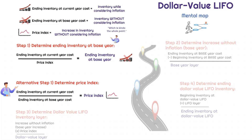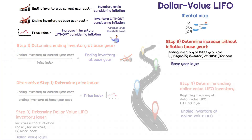The price index is used to allow the company to determine the increase in inventory without considering inflation. In step one, we have two options. If they don't give you the price index, they'll generally give you the ending inventory at base year. If we are determining the price index, we take the ending inventory at current year cost and divide it by the ending inventory at base year cost. But if they do give you the price index, we use it to determine the ending inventory at base year cost. Then in step two, we determine the increase without inflation — the difference from beginning inventory at base year to ending inventory at base year.